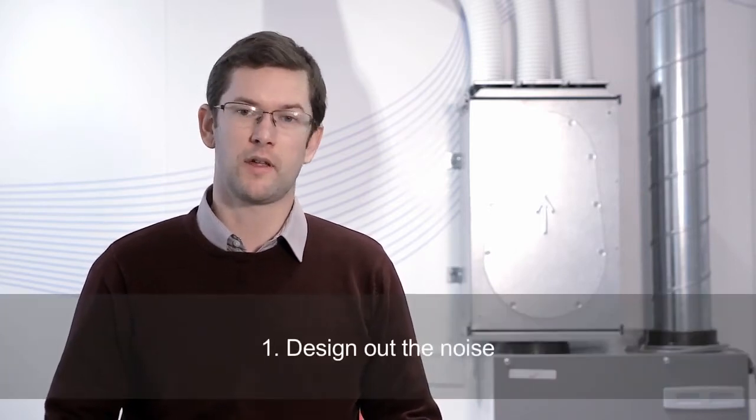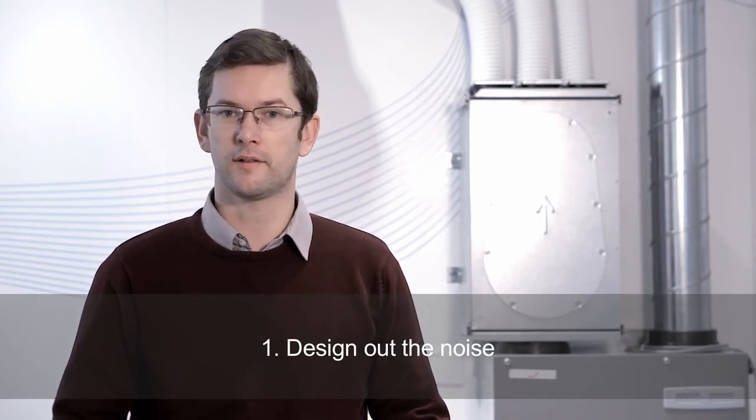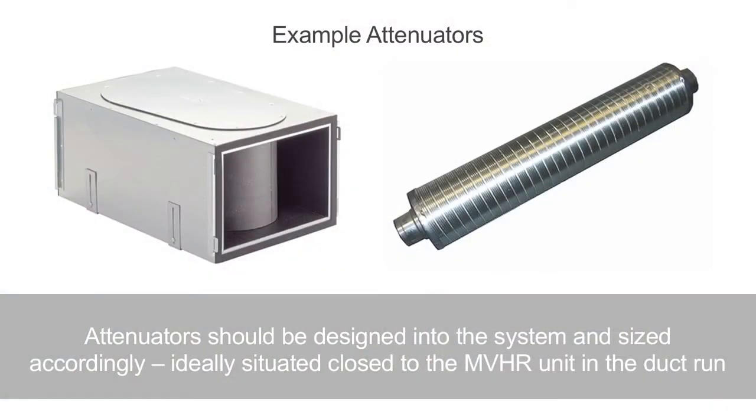Now I'm going to talk about the top five things to consider to eliminate any kind of noise issues. The first one would be to look to design out the noise. So that's using things like attenuators—that might be an attenuator built into a semi-rigid manifold or it might be a separate attenuator for a branch system.